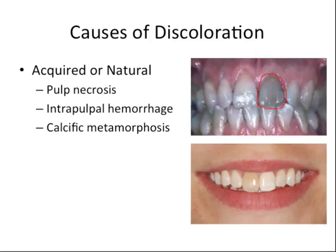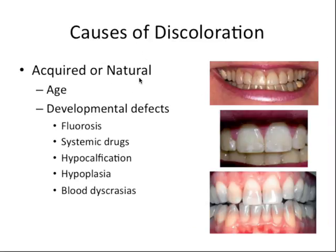Calcific metamorphosis is a fancy term referring to the formation of tertiary dentin following trauma to a tooth that did not cause necrosis. Some cases the tooth is able to basically form a callus and heal itself; this causes a loss of translucency and causes the tooth to become sort of yellow-orangey-brown. You can attempt external bleaching first, or otherwise you can do a root canal and then try internal bleaching for a tooth like this.